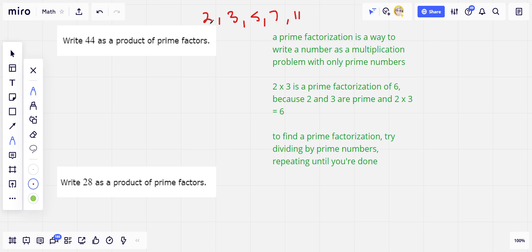So 44, right away, it's even, so I know it's divisible by 2. Let's take 44 and divide it by 2, and we get 22. So far, we've factored out a 2, so I'm going to circle that to keep it on my list.